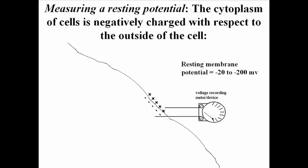In this cartoon we have a voltmeter with one of its electrodes penetrating the membrane of a cell. And this is how we would measure the resting potential. The voltmeter will register that minus 20 to minus 200 millivolts, telling us that the interior of the cell is indeed negative relative to the outside of the cell.